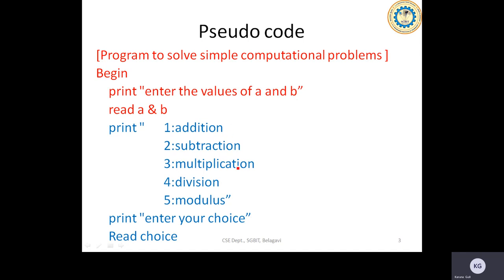First we'll try to display the menu, and according to the menu, we'll take up the case values. Case 1 stands for addition, case 2 deals with subtraction, case 3 deals with multiplication, case 4 talks about the division operation — where we take care of the divide-by-zero error — and the fifth one is the modulus operator. The pseudocode asks us to read two values, A and B.